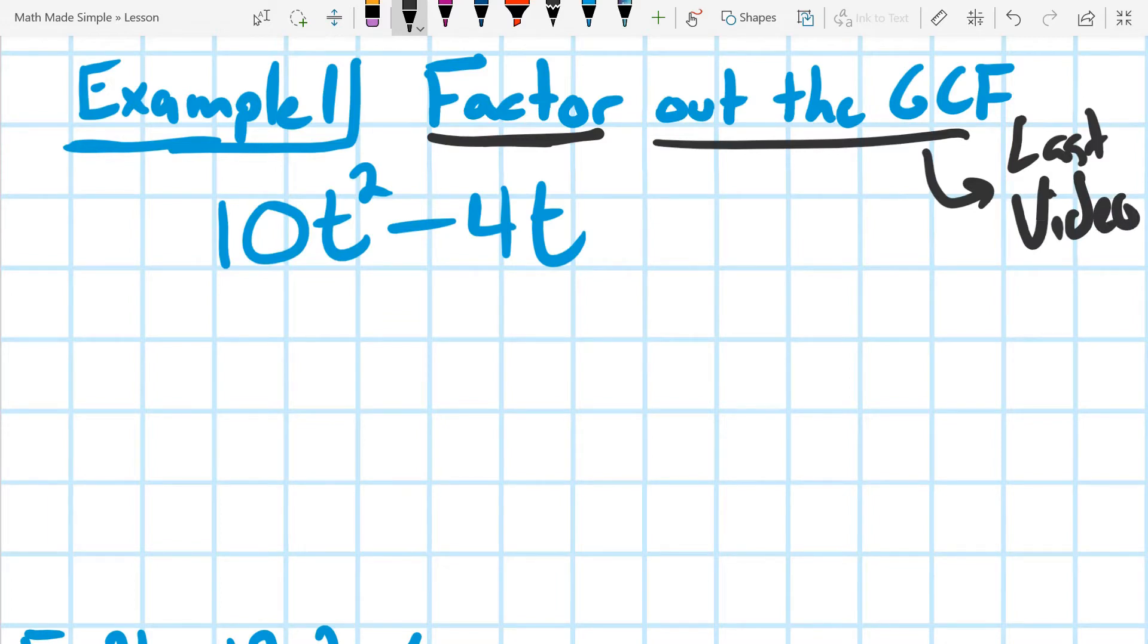So what we want to do first is take a look at this binomial we have here. It's a binomial, so it's not one part. It's actually two terms, and what we're going to try to do is take out the same thing from both of them. So that's where the C, the common, comes in.